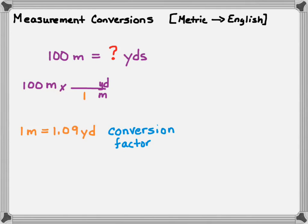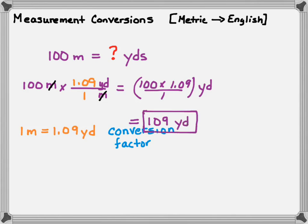Now I plug in the conversion factor back into my equation. It says 1 meter, so I put the 1 on the bottom, equal to 1.09 yards, so I put 1.09 on top next to yards. I've written it this way because I want meters to cancel — and they will cancel out — leaving me with 100 times 1.09 divided by 1. The only units left are yards, and once I do this multiplication my answer is 109 yards. So 109 yards is equal to 100 meters.